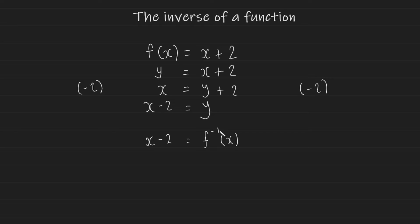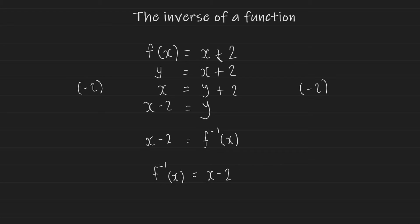This looks similar to our original f(x) except there's a minus one. The original f(x) means the function f; f⁻¹ means the inverse of f. Now, that minus one isn't actually a power — it's just a symbol, so don't think f⁻¹ can be manipulated like variables in algebra. I know you might be thinking: if the original function was x+2, the inverse is obviously x−2, so why go through this process? As functions become more complicated, this method always works.